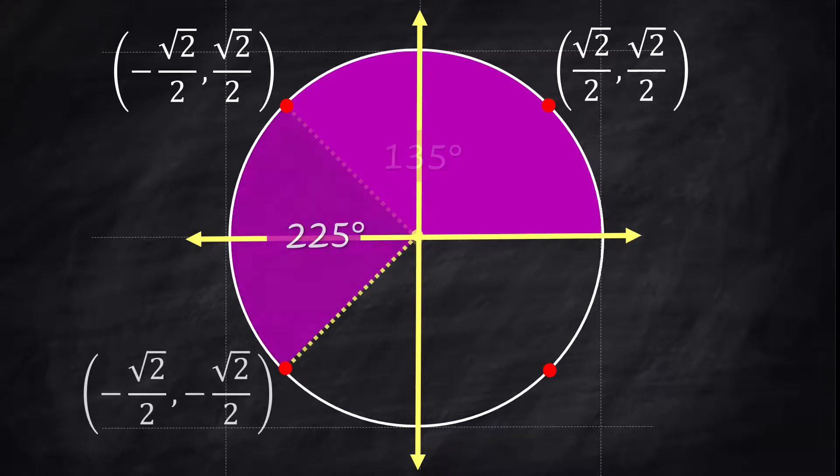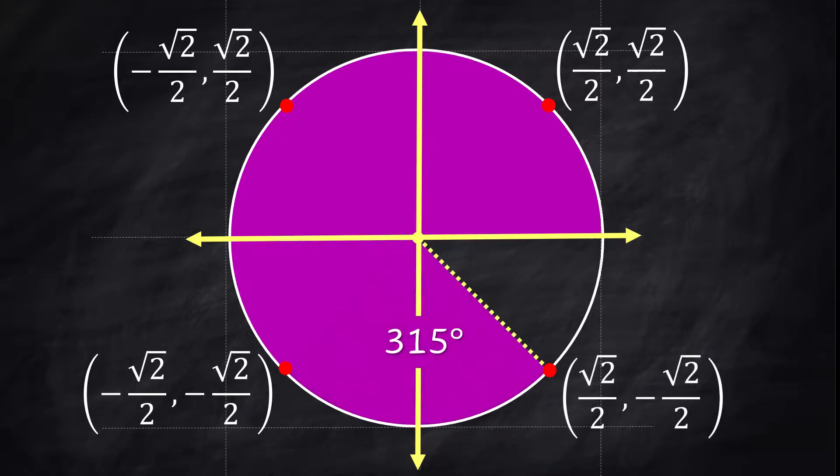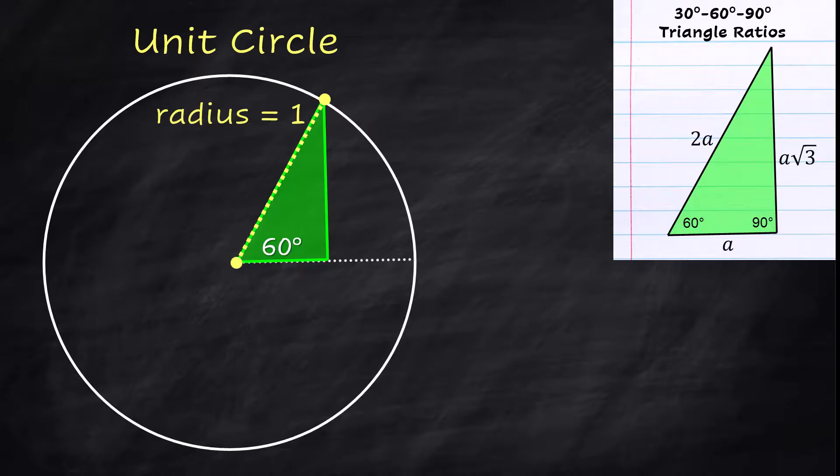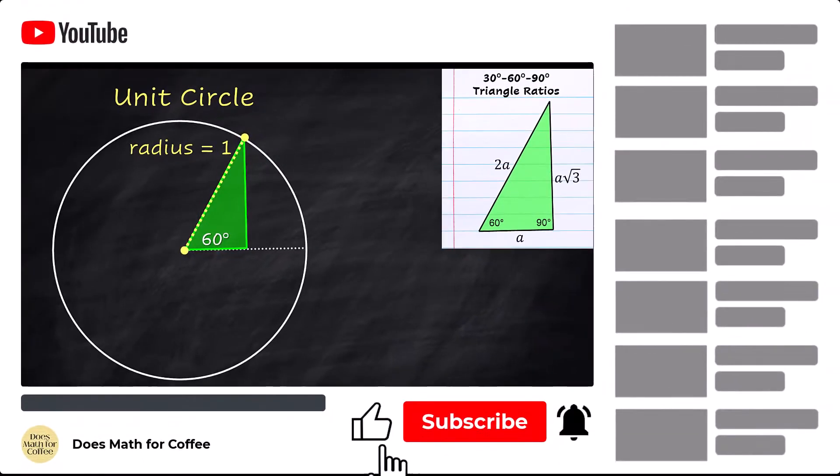We swing down to quadrant three, that's 225 degrees. And in this quadrant, both coordinates are negative and over to quadrant four, which is 315 degrees. In this quadrant, the x is positive and the y is negative.